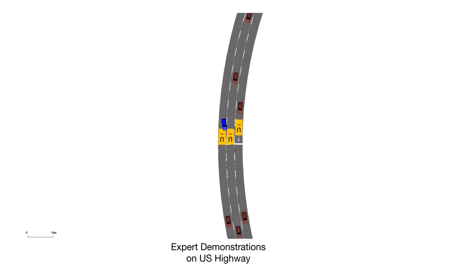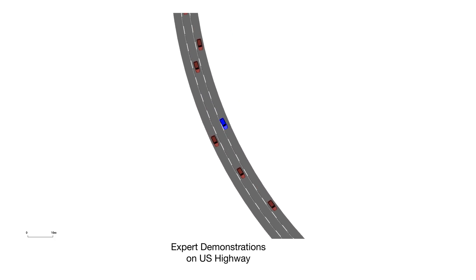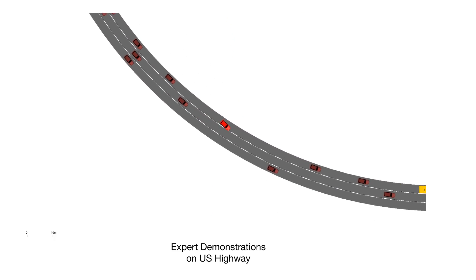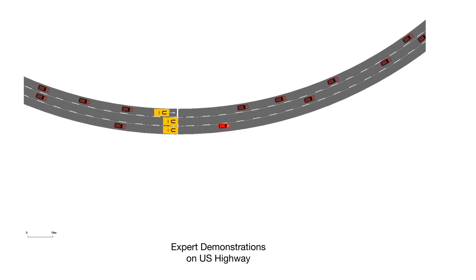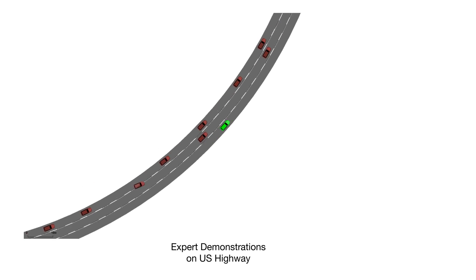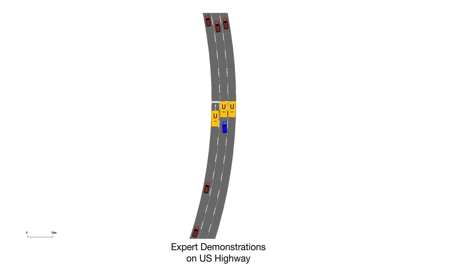Here we see the expert agent driving in the US highway scenario. Lane change wishes are indicated by blue and red. The agent is maneuvering smoothly and proactively through light and dense traffic.